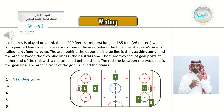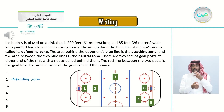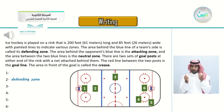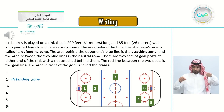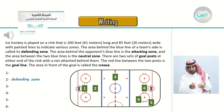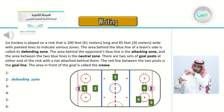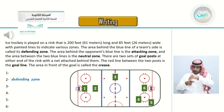Ice hockey is played on a rink that is 200 feet (61 meters) long and 85 feet (26 meters) wide, with painted lines to indicate various zones. The area behind the blue line on the team's side is called its defending zone. The area behind the opponent's blue line is the attacking zone, and the area between the two blue lines is the neutral zone. There are two sets of goal posts at either end of the rink with a net attached behind them. The red line between the two posts is the goal line. The area in front of the goal is called the crease.